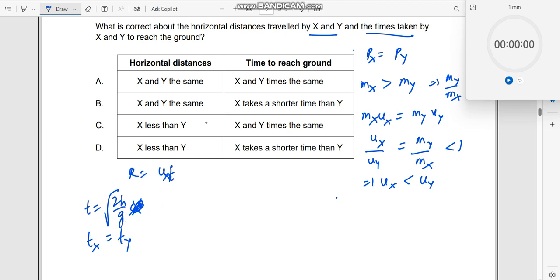So, therefore, this does not depend on anything. So, this R is directly dependent on U, initial velocity. So, you can now say Rx is less than Ry because Ux is less than Uy, right. So, which is the option here?